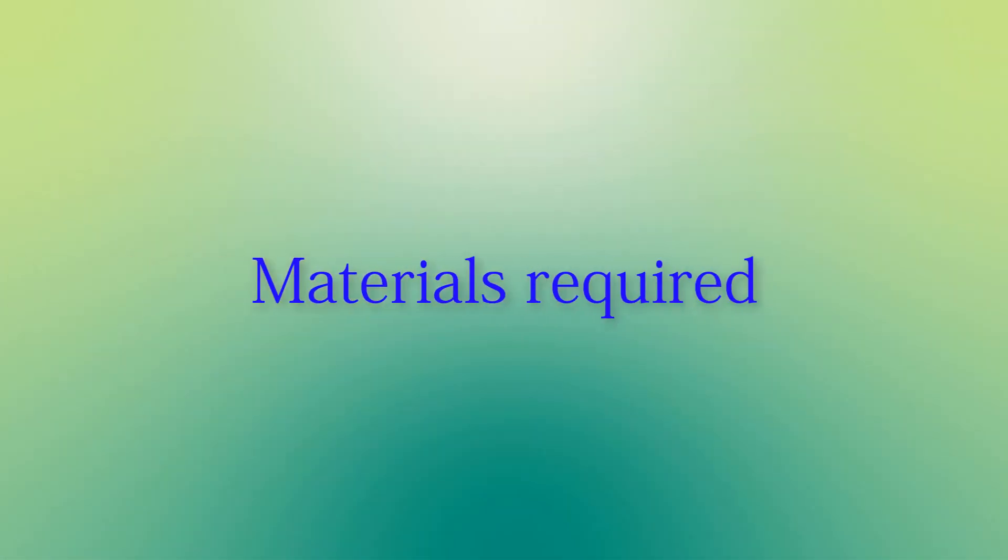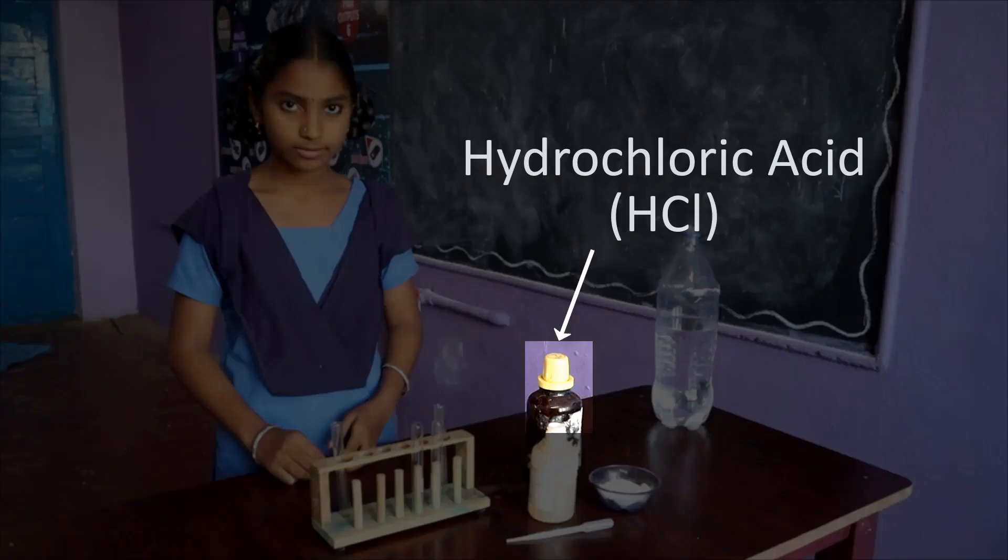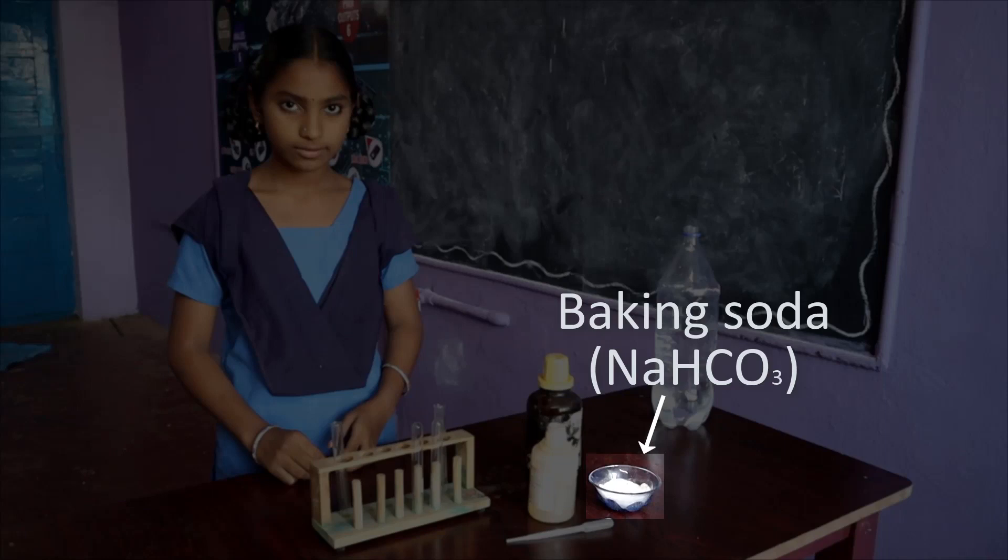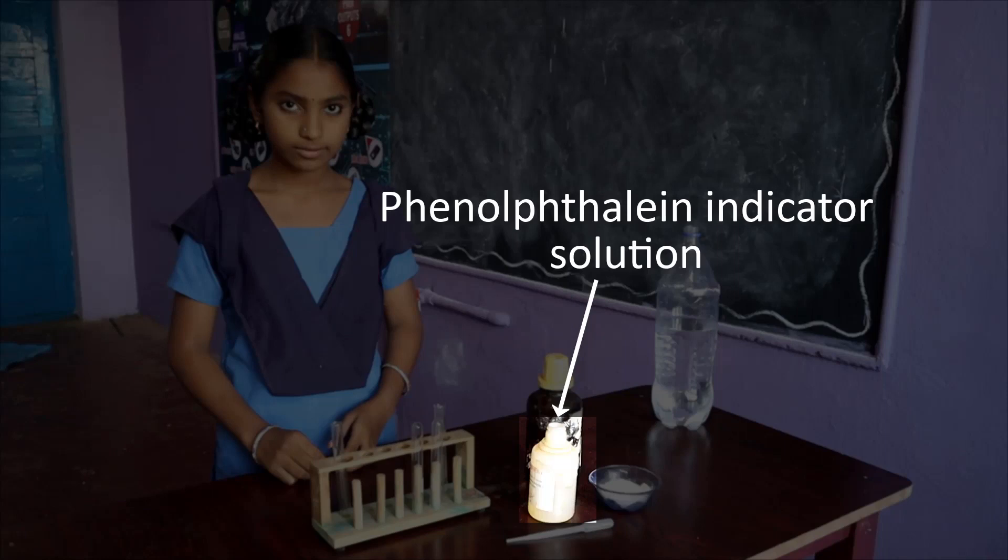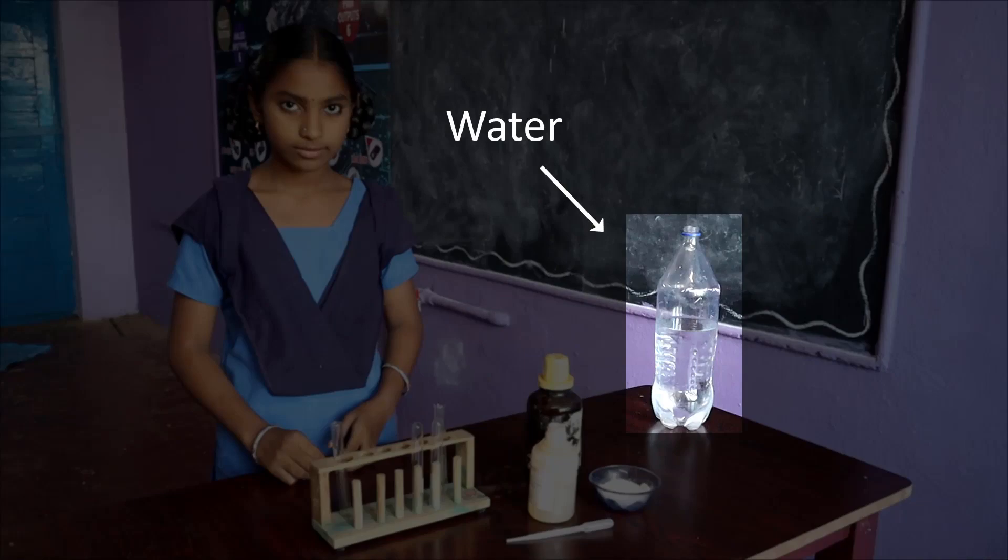Materials required: hydrochloric acid (HCl), baking soda (NaHCO3), we can use caustic soda (NaOH), phenolphthalein indicator solution, test tubes, dropper, and water.